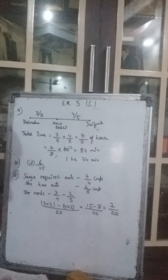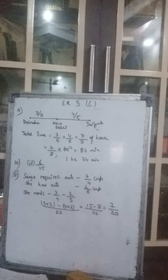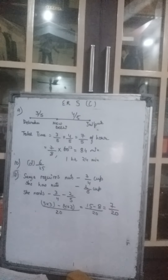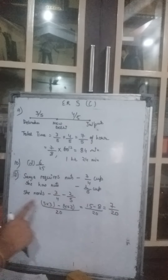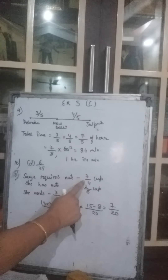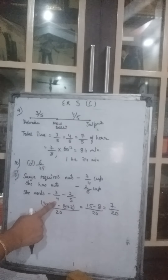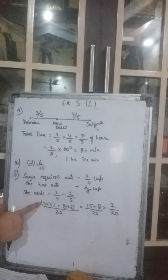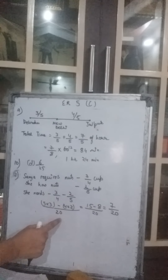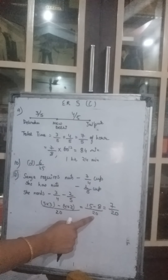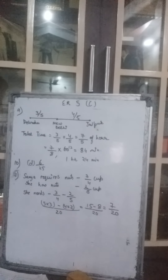The 11th question is cancelled — just cross it from your book. 12th question: Sania is making a pudding for which she needs 3 upon 4 cup of crushed nuts. She already has 2 upon 5 cup. So how much more does she need? That is 3 upon 4 minus 2 upon 5. LCM is 20. 20 divided by 4 gives 5, multiplied by 3 — minus 20 divided by 5 gives 4, multiplied by 2. So 15 minus 8 upon 20, which is 7 upon 20. This much more crushed nuts she needs.